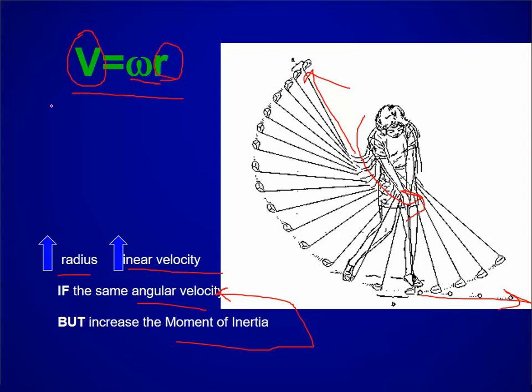So this holds true only if you can maintain this angular velocity. And the angular velocity becomes harder to maintain when you increase the length of the golf club because the moment of inertia increases.